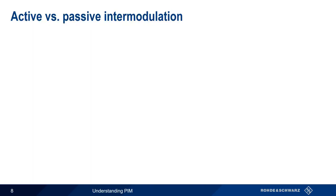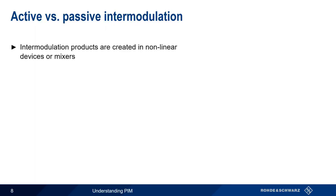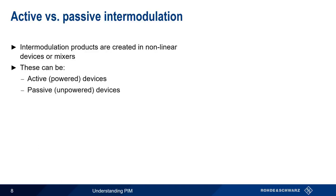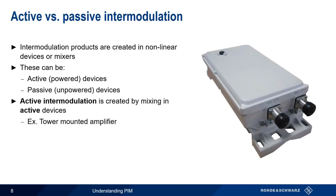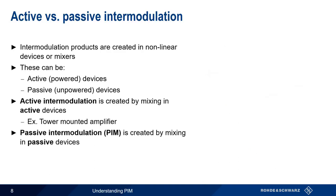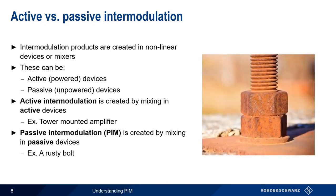Now that we understand what intermodulation is, let's talk about the difference between active and passive intermodulation. Intermodulation products are created in nonlinear devices or mixers, which can be either active or powered devices, or passive or unpowered devices. Active intermodulation occurs by mixing in active devices — an example being a tower-mounted amplifier. Passive intermodulation, or PIM, is created by mixing in passive devices, the classic example being a rusty bolt. PIM is sometimes referred to as the rusty bolt effect because corroded metallic junctions are a very common source of PIM.